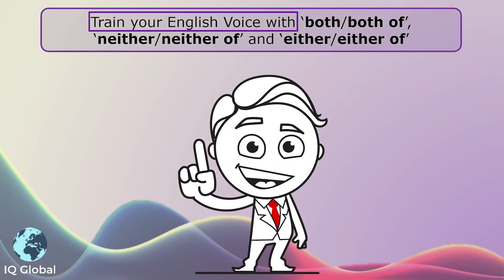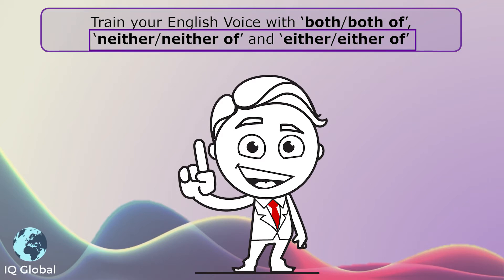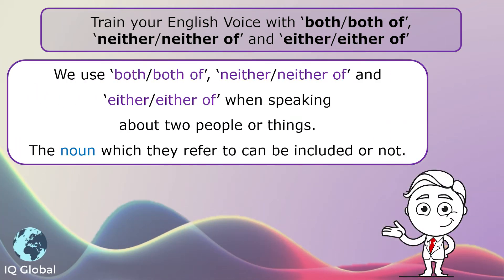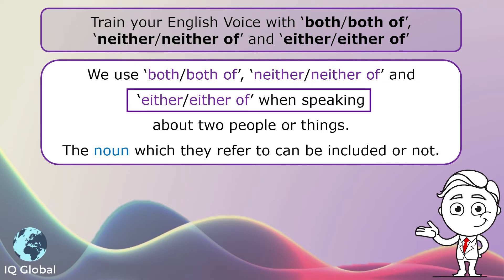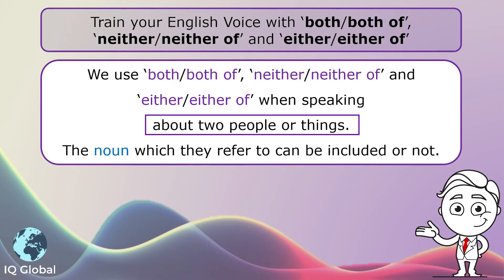Train your English voice with both, both of, neither, neither of, and either, either of. We use both, both of, neither, neither of, and either, either of when speaking about two people or things.